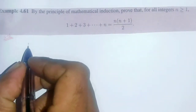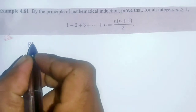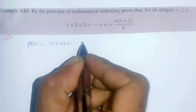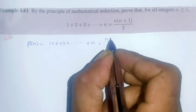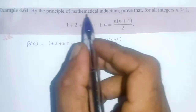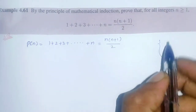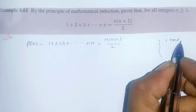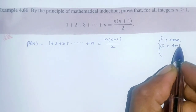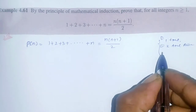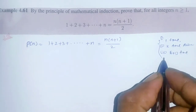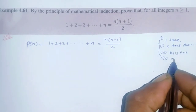We take P(n) as our statement. The principle of mathematical induction works as follows: first, prove one value is true; second, assume P(k) is true; third, prove P(k+1) is true; and finally conclude P(n) is true for all n.